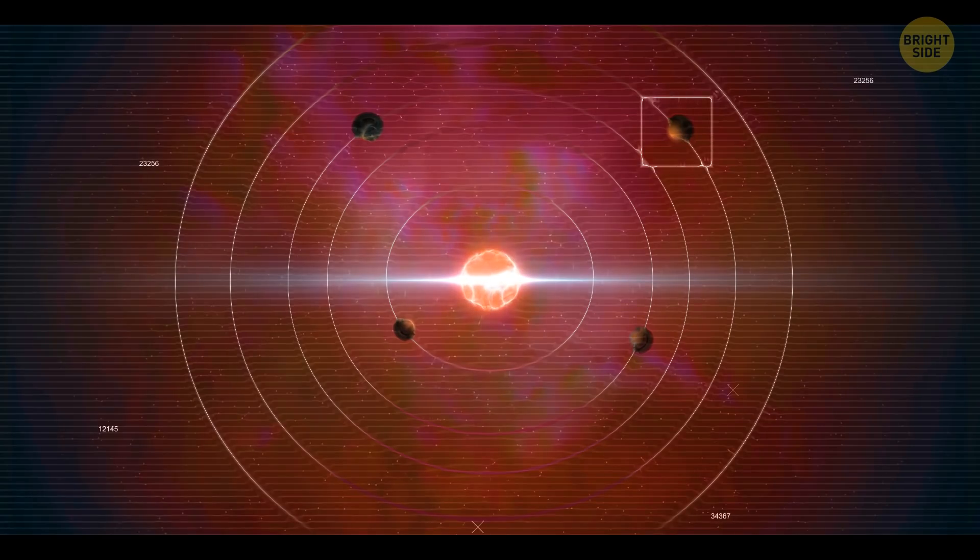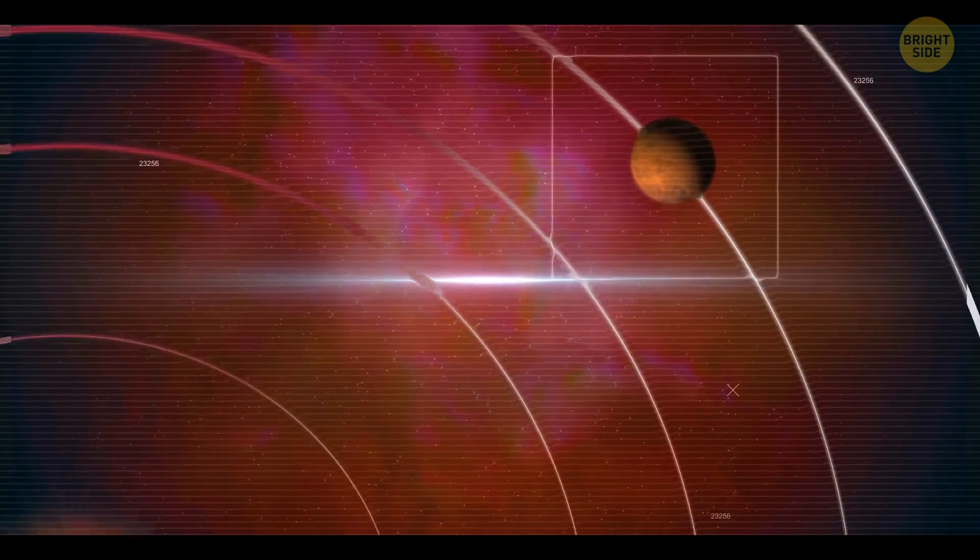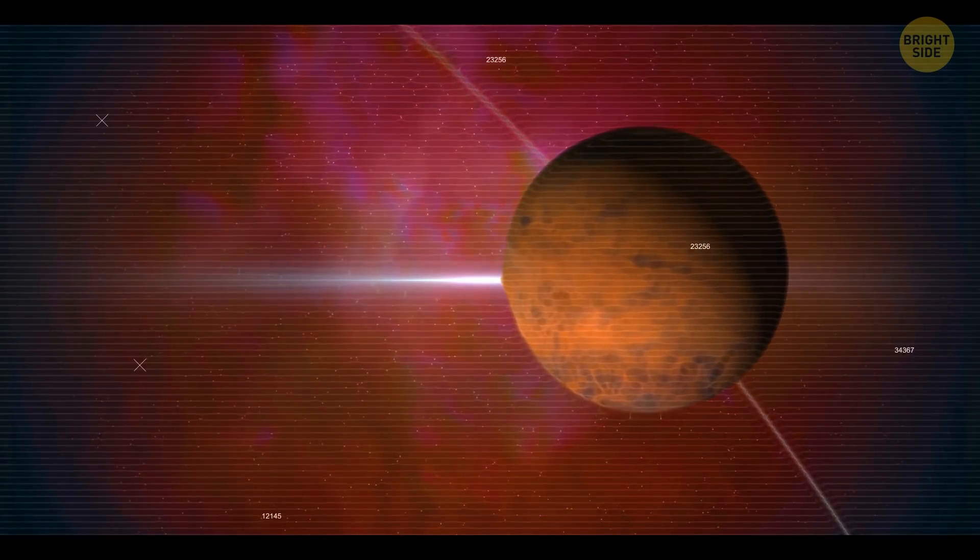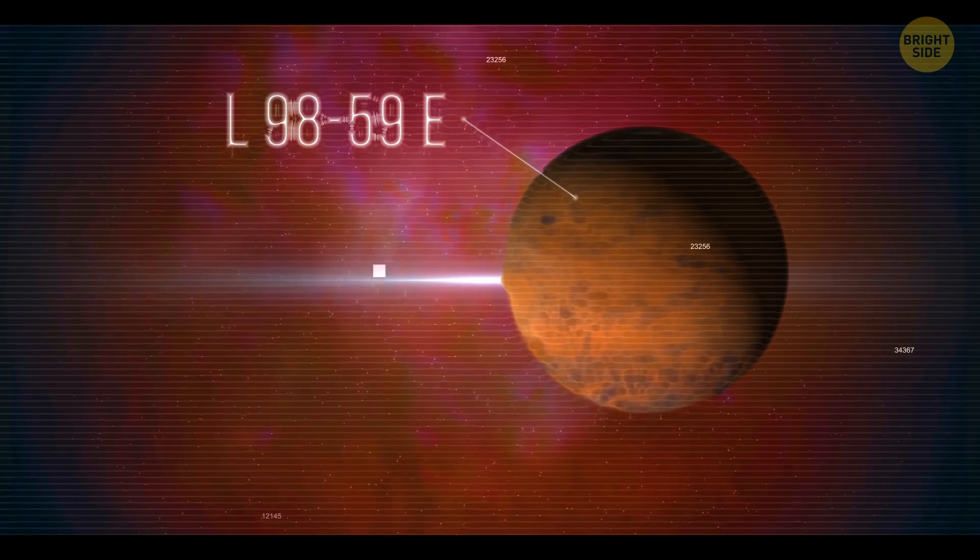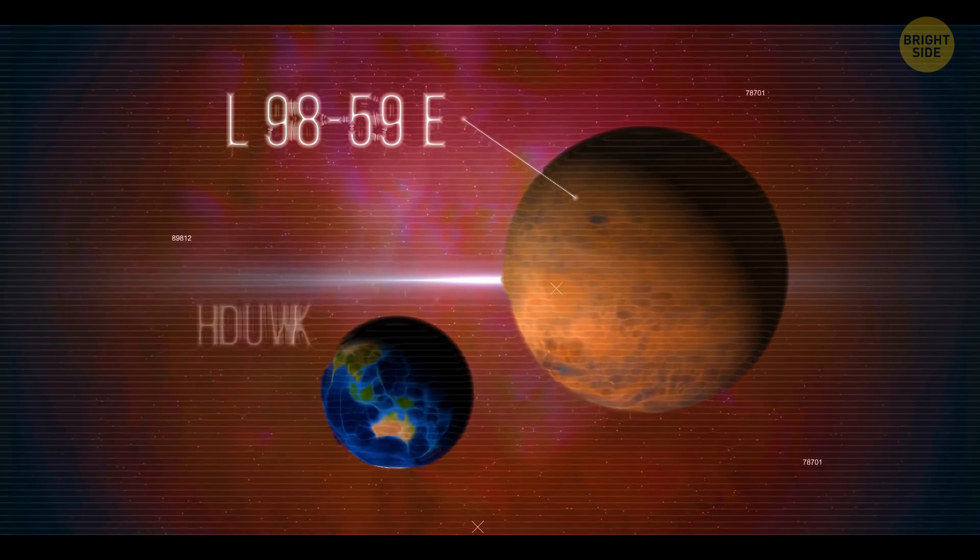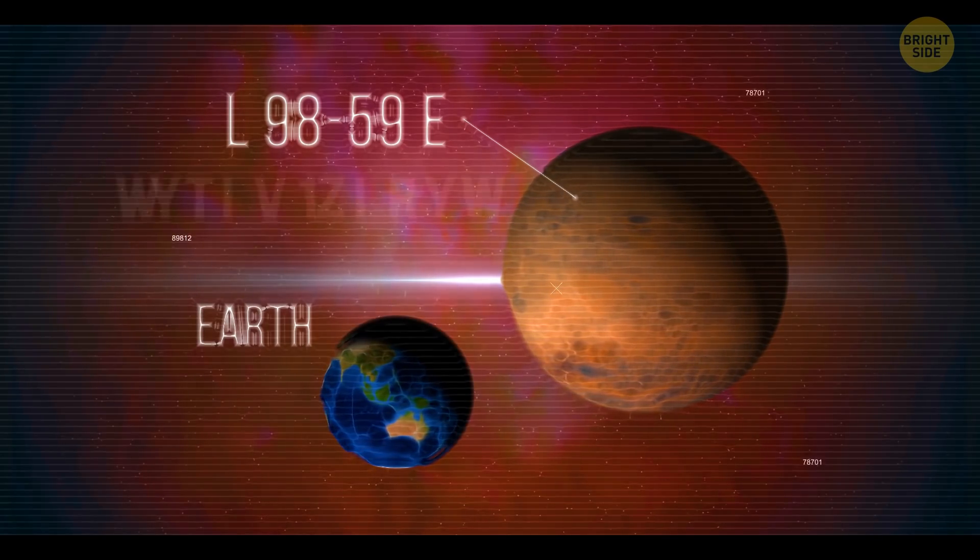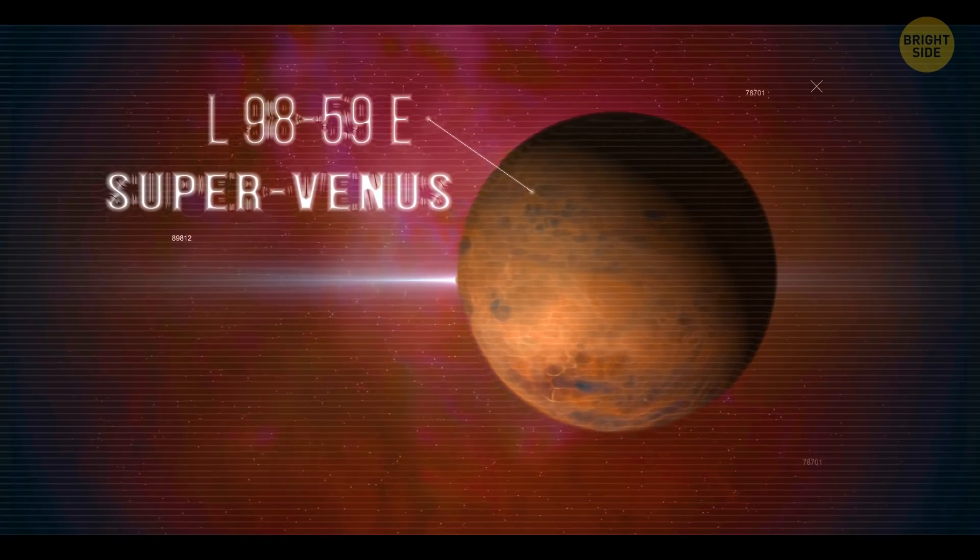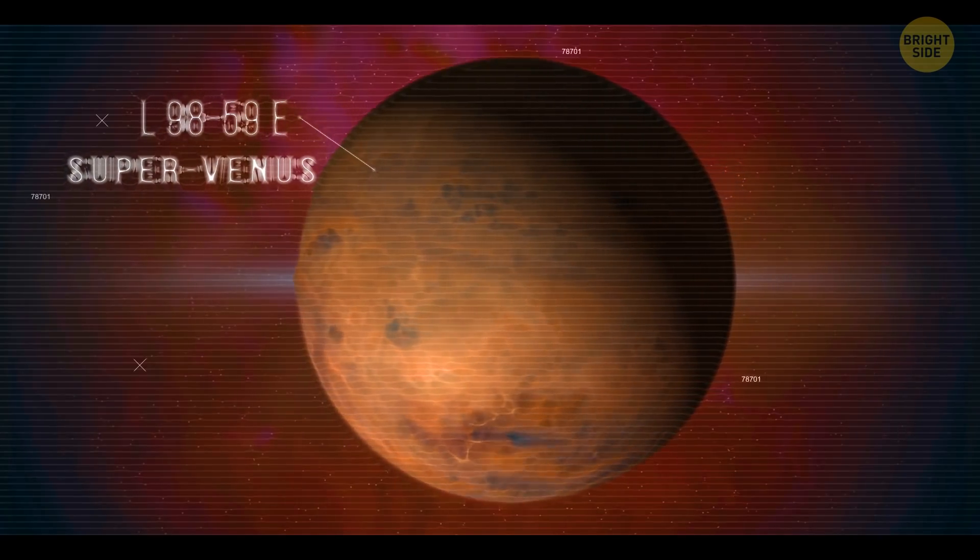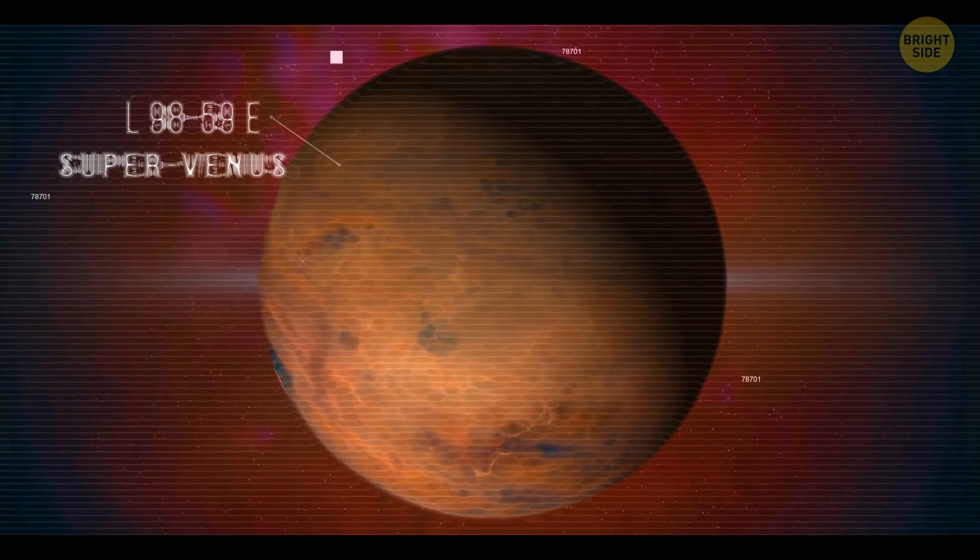Let's move on to the next planet in the star system. This newly discovered planet is of the super-Venus class, L9859e. It's a rocky planet three times the size of Earth. The super-Venus class means that the planet is heavy enough to have an atmosphere. But the conditions there are more like a greenhouse.